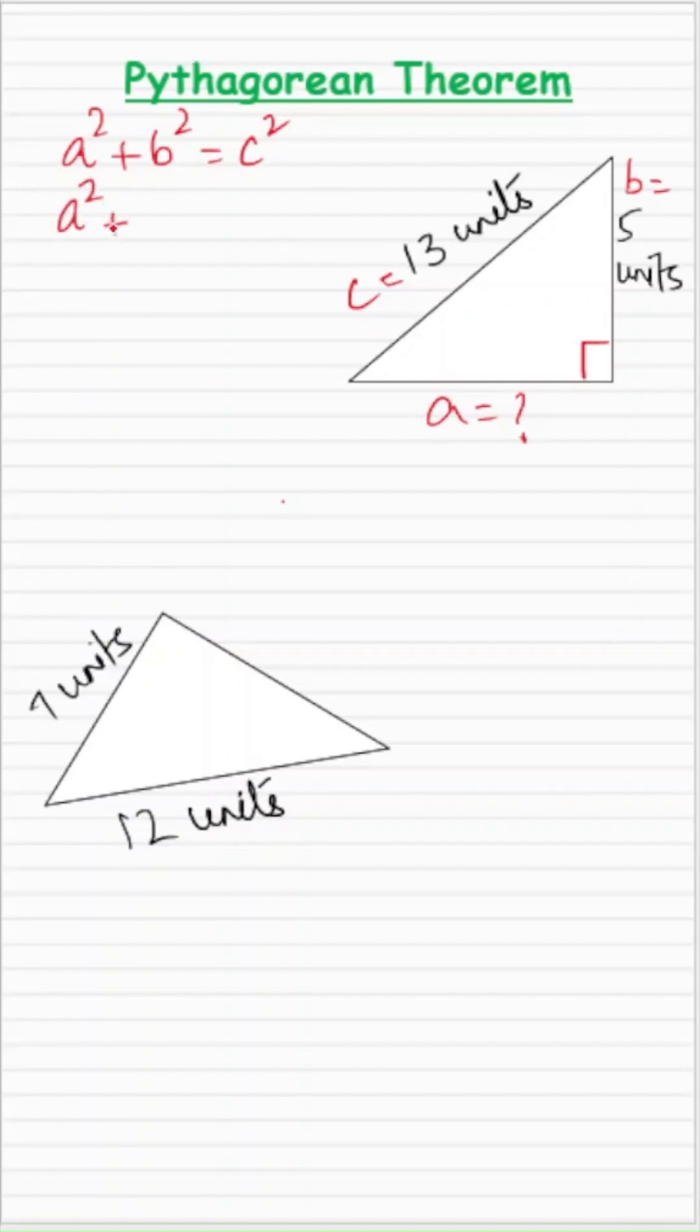A is missing, so let it be A² as is. B is given as 5, so 5². C is 13, so 13². A² + 5² is A² + 25, and 13² is 169. So A² + 25 = 169.